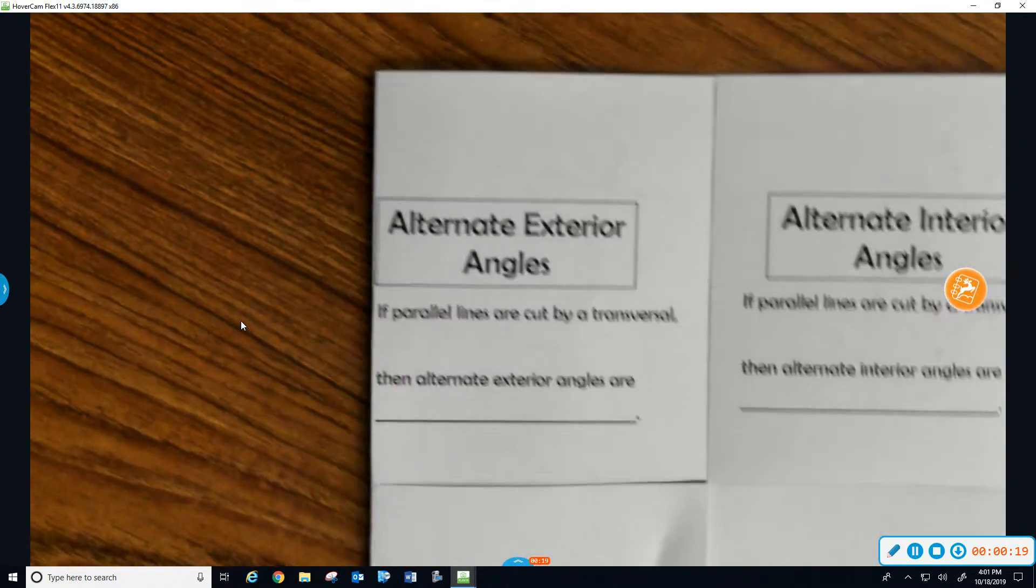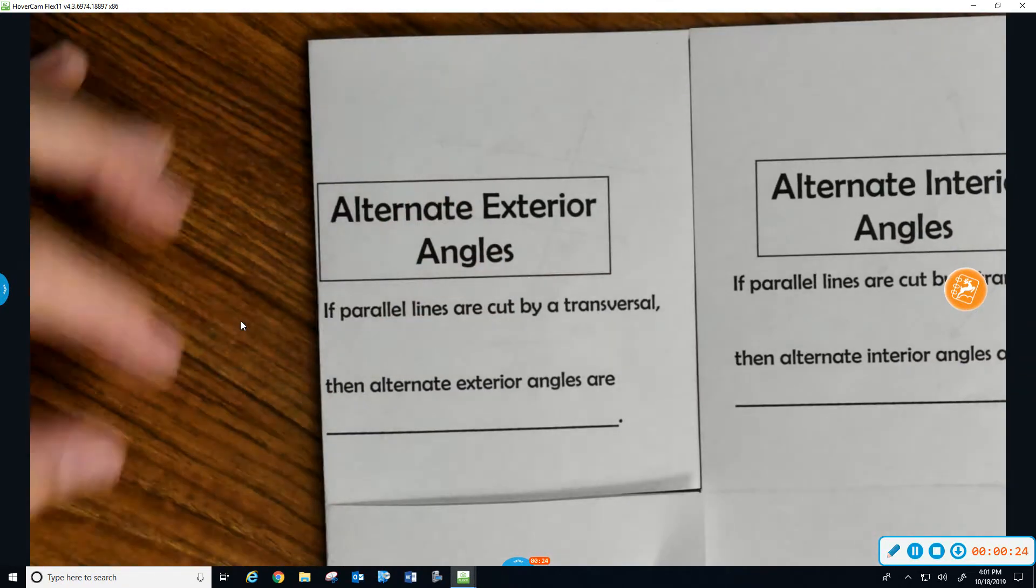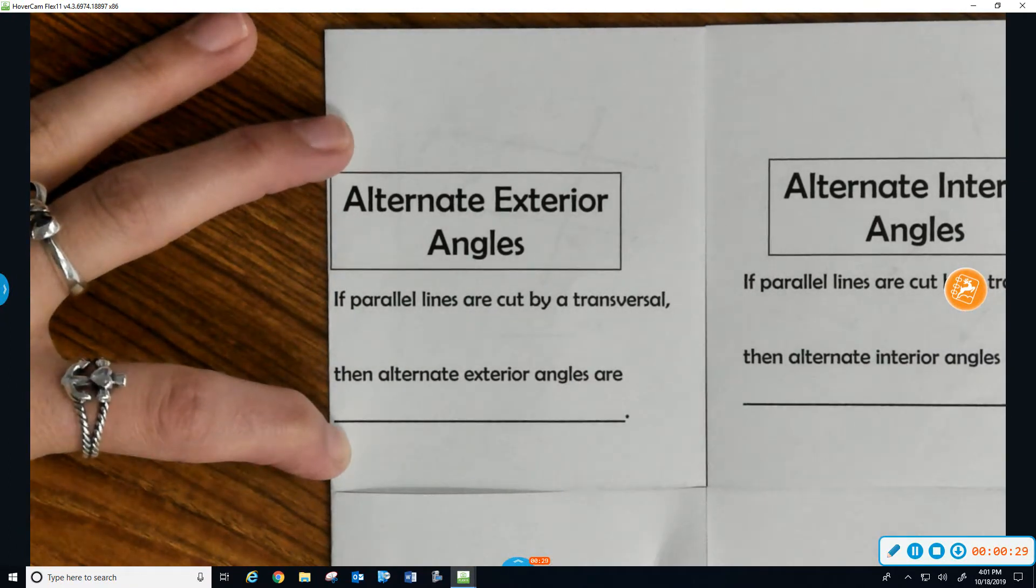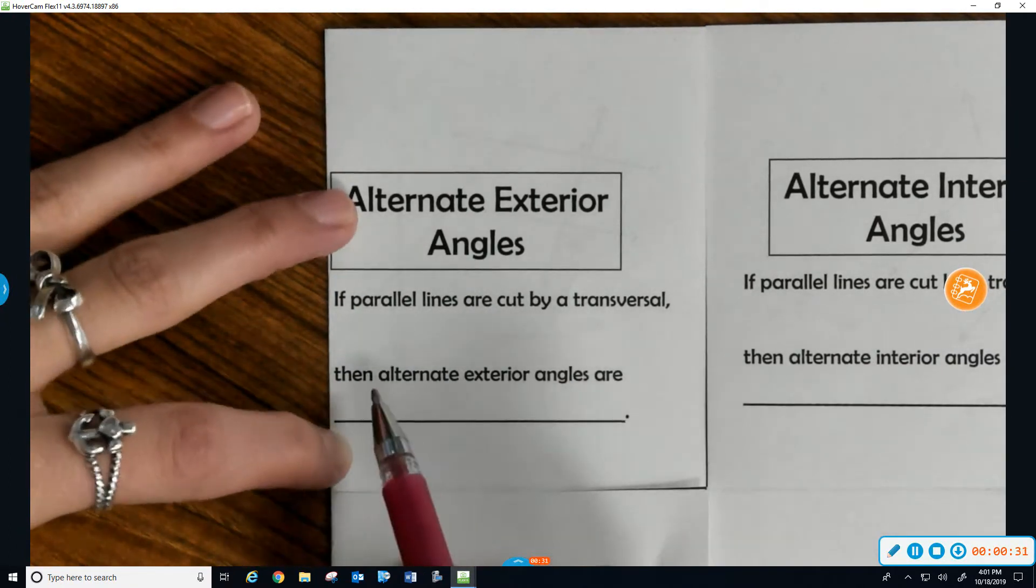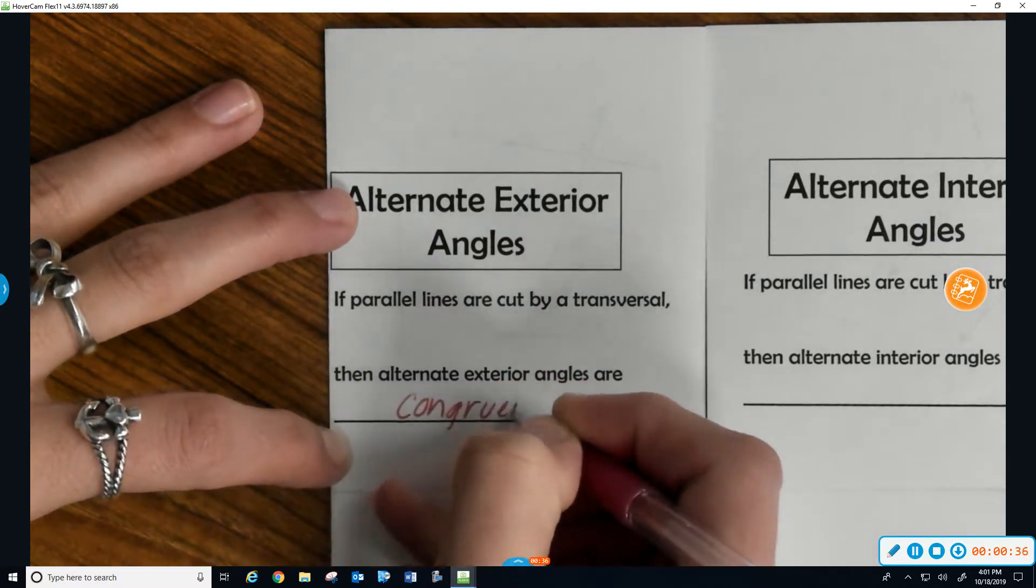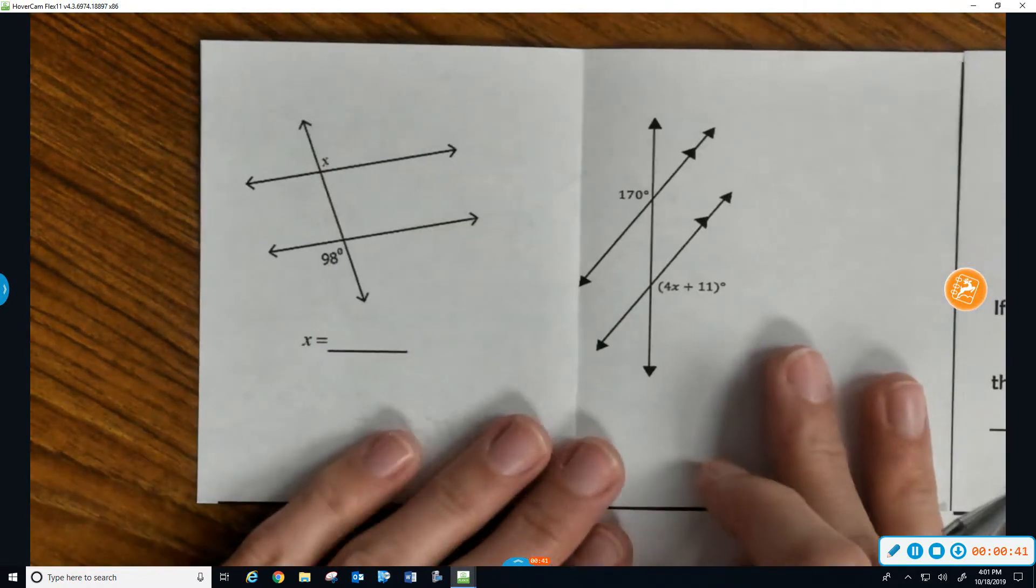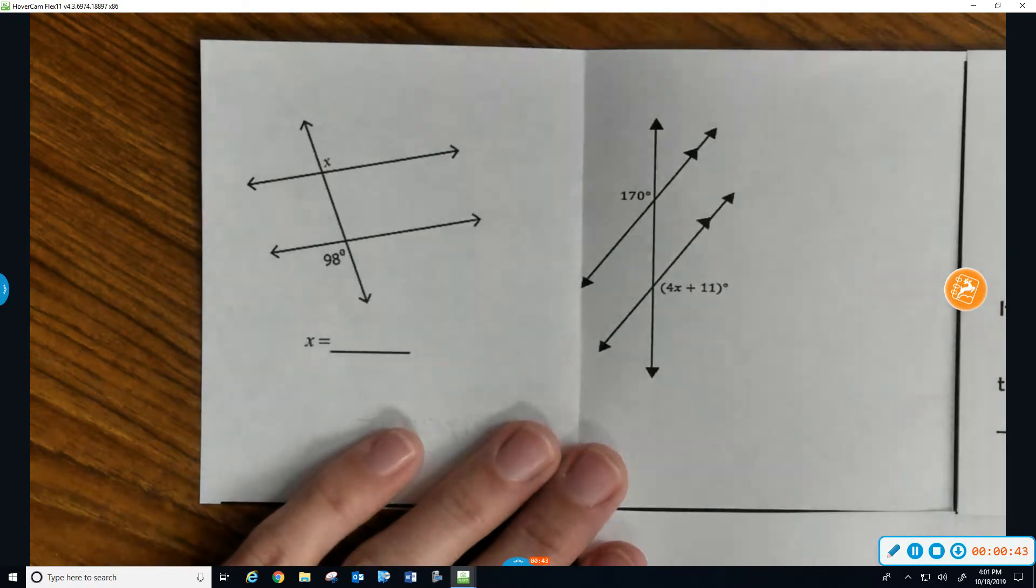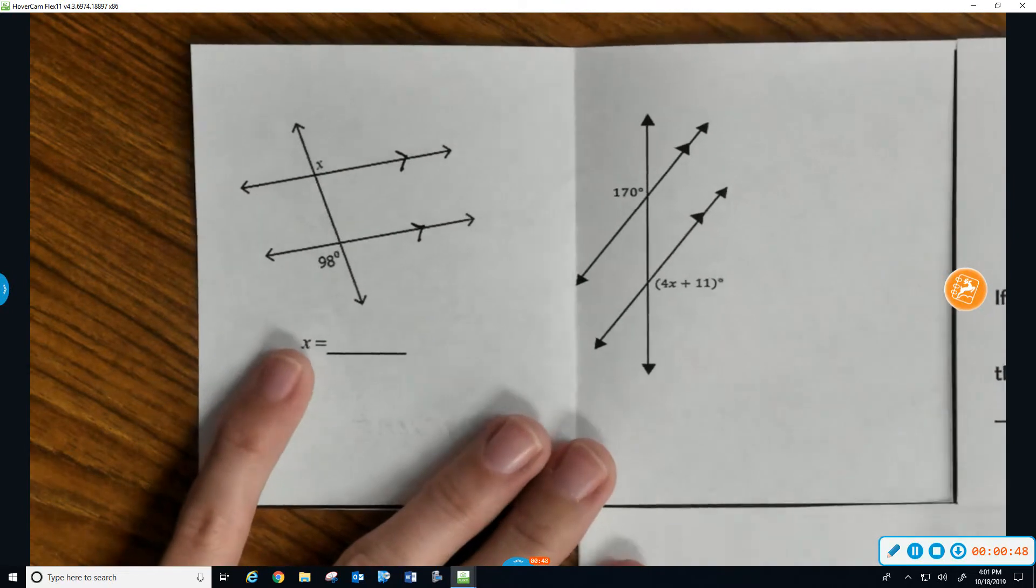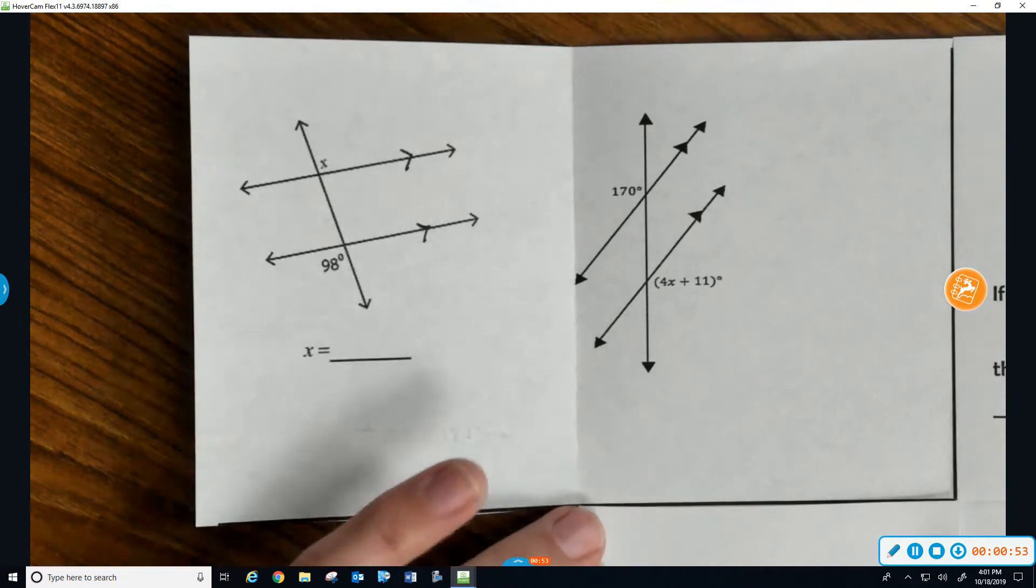So the first thing we're going to do is take a look at your alternate exterior angle flap right here in the top left. Our conditional statement says if two lines are cut by a transversal, then alternate exterior angles are congruent. As a reminder of what we talked about in the previous notes, when we open it up, we have two different examples here. First thing we need to do on the left one is make sure that we put parallel line markings on here. If I am going too fast, I need you to pause it and resume once you've caught up.